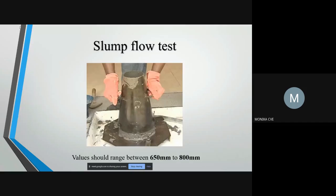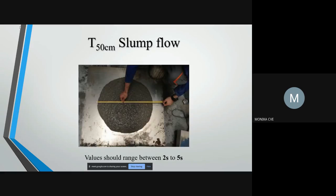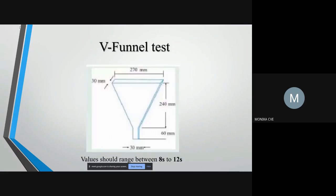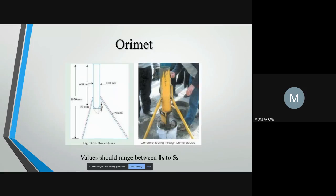This is the slump flow test setup; the value should range between 650 mm to 850 mm. Next is the T50 cm slump flow test; its range should be between 2 to 5 seconds. V funnel test value should range between 8 to 12 seconds. This is the ORMIT device and its value should be between 0 to 5 seconds.